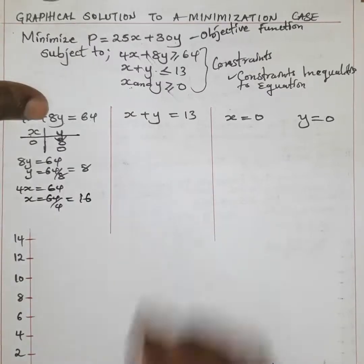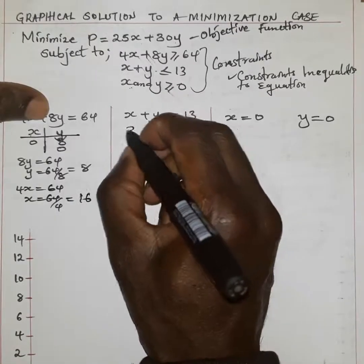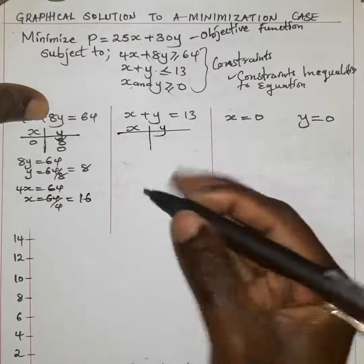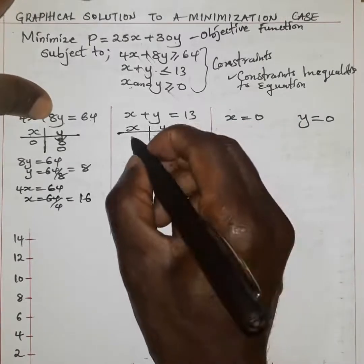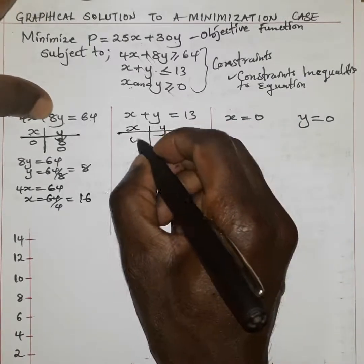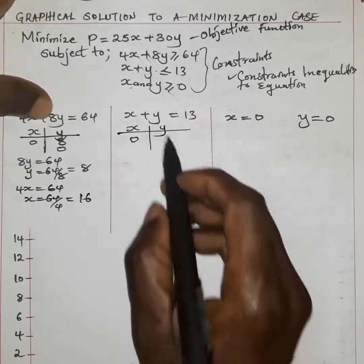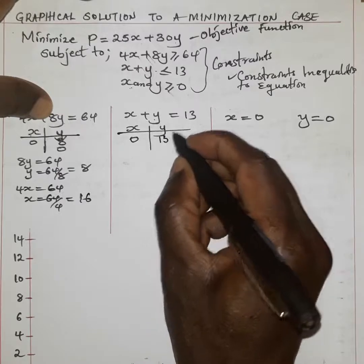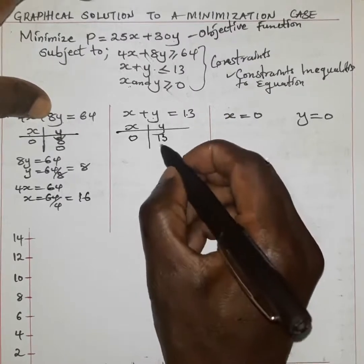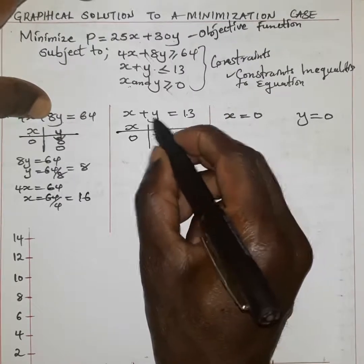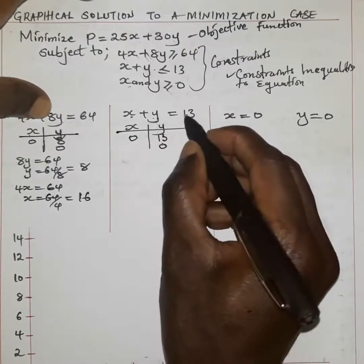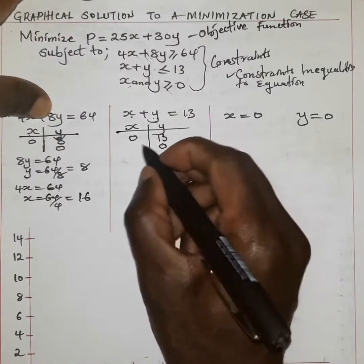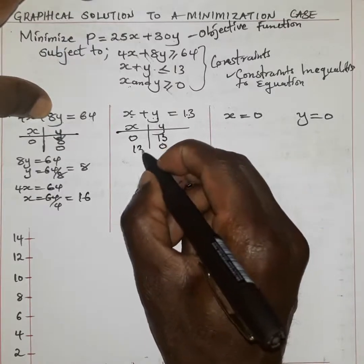For the second equation, X and Y values when each is 0: when X is 0, Y should be equal to 13. And when Y is 0, X should be equal to 13. So we are supposed to plot these coordinates.